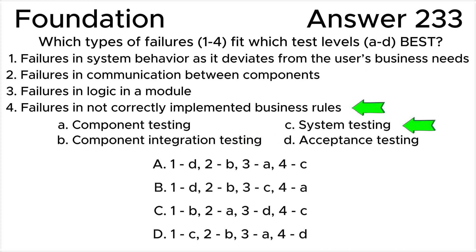Test level C, system testing, corresponds to failures in not correctly implemented business rules, statement 4. Business rules are the test basis for system testing.